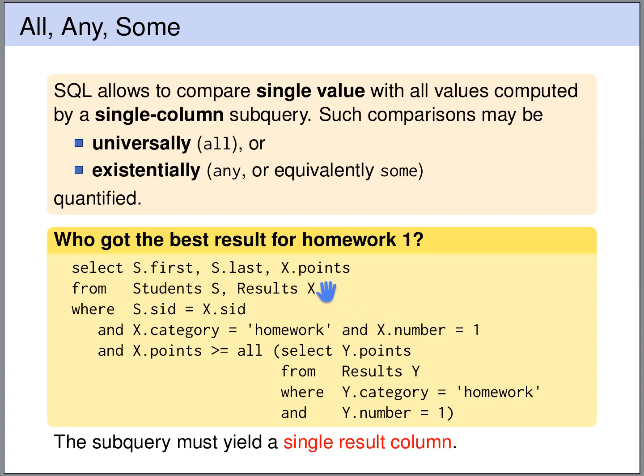The outer query queries the students and results table. It looks only at results belonging to the student and only at homework1 results. So x is a homework1 result of the student if it exists. And we require that the number of points obtained on this homework by the student s is greater or equal than all homework1 results. So indeed this will be true if it's the best homework1 result. So this query gives us all the students that have obtained the best homework1 result.